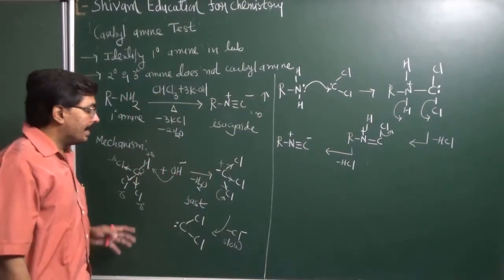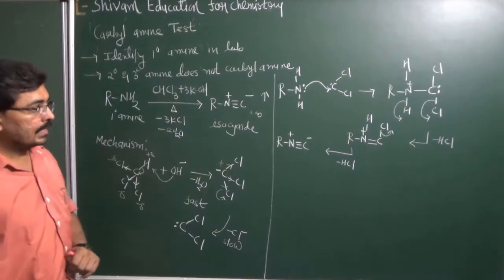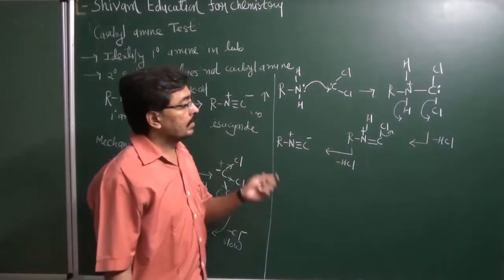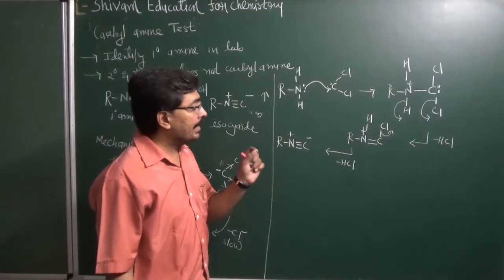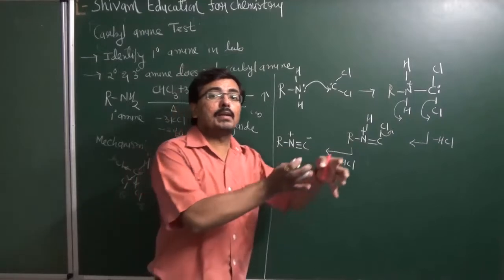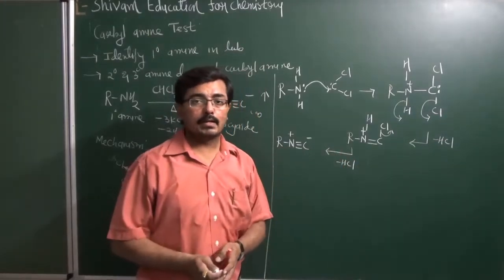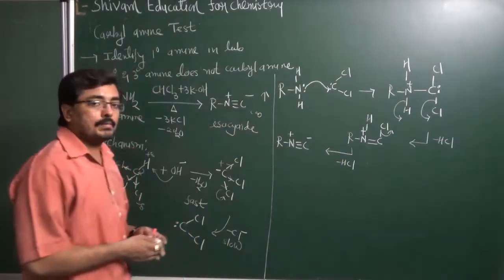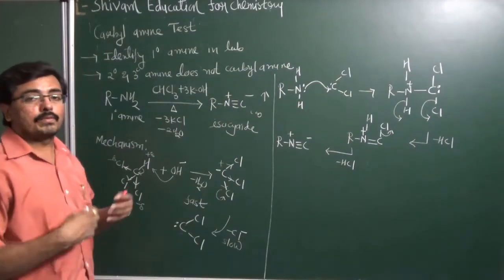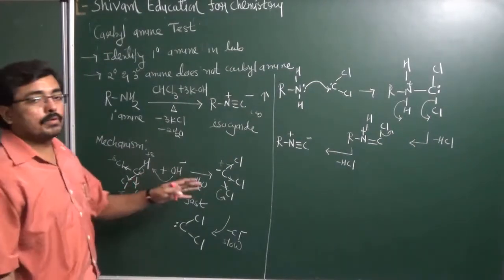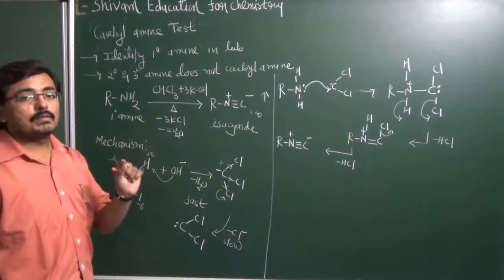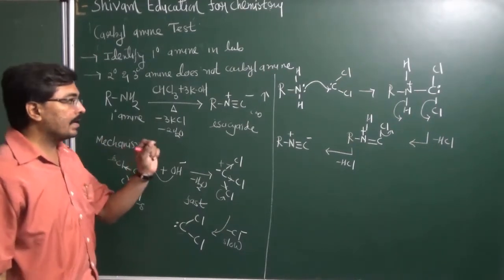In the case of secondary amine, nitrogen has only one hydrogen. Therefore, secondary amine cannot form the second pi bond, and therefore secondary amine does not give the Carbylamine Test. Similarly, tertiary amine — nitrogen has no hydrogen atoms — therefore it is not able to form a pi bond. So it is observed that the Carbylamine Test will be given by only primary amine; secondary and tertiary amines do not give the Carbylamine Test.